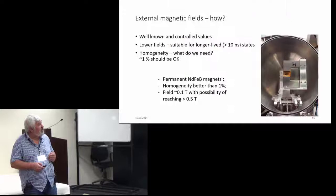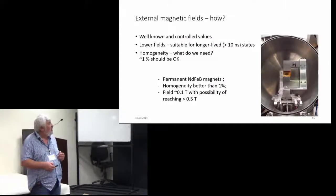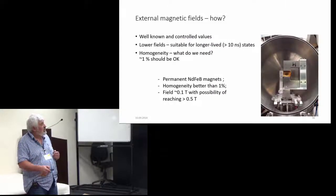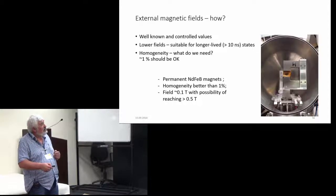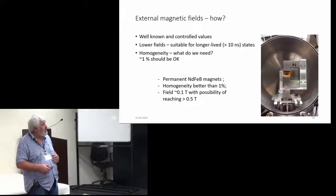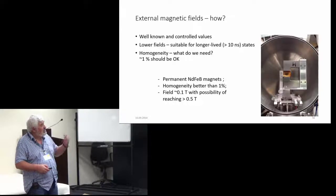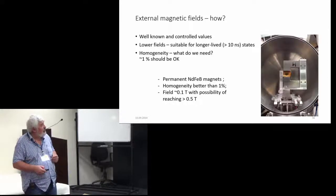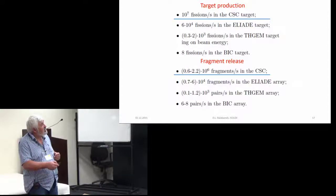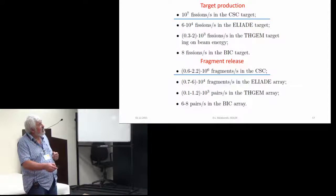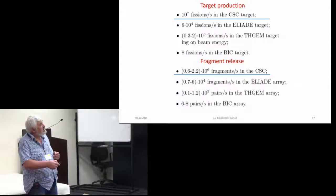With a permanent magnet we can have fields which polarize the iron foils. In such a target we can expect to have something like 10 to the 5 fissions per second.